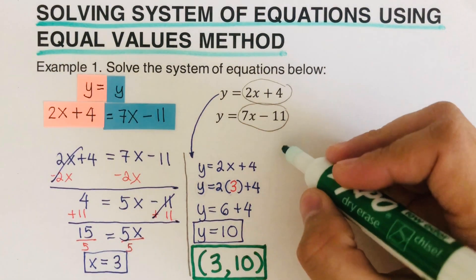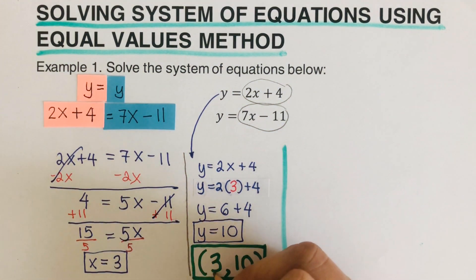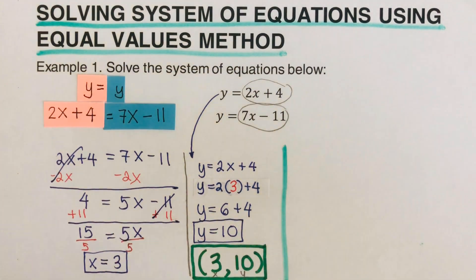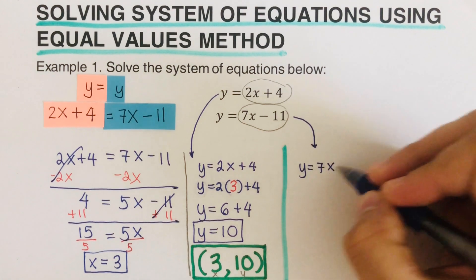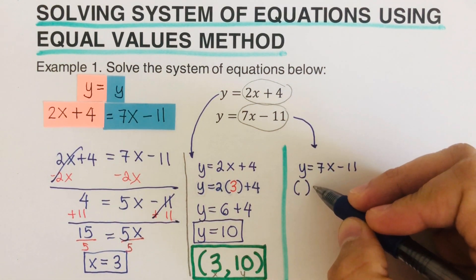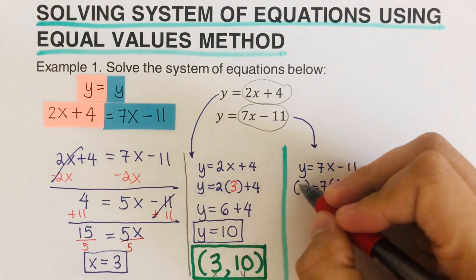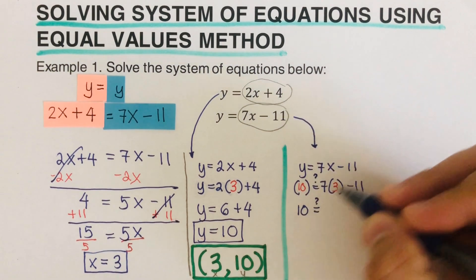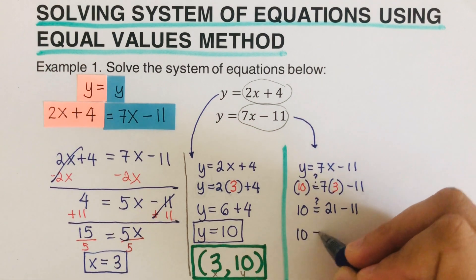How do we know if we got the correct answer? Remember, x equals 3 and y equals 10. The fourth step is to check your work. We plug x equals 3 and y equals 10 into the original equations, and it has to work for both of them. For the second equation, y equals 7x minus 11: plugging in gives us 10 on the left, and 7 times 3 minus 11 equals 21 minus 11, which is 10. So 10 equals 10 — it works.